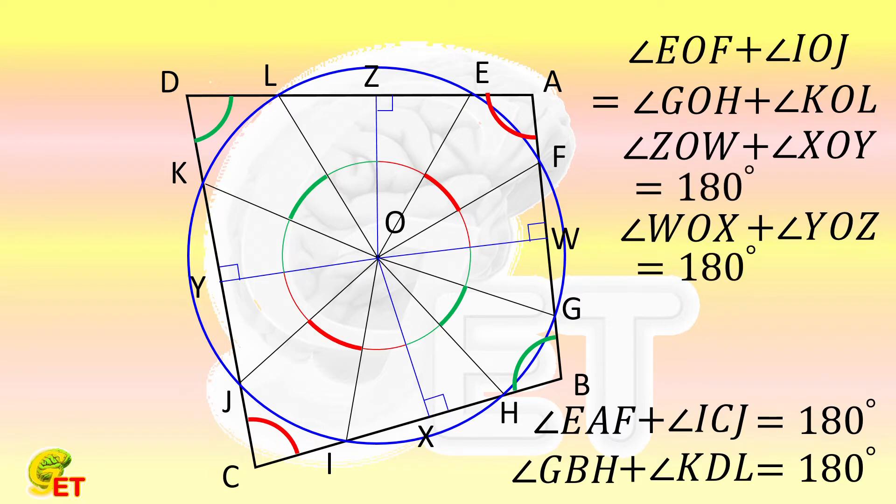Regarding the second benefit, let's take a look at the quadrilateral AWOZ first. The angles ∠AWO and ∠OZA are already right angles, so the summation of the other two angles must be 180 degrees. This conclusion applies to the other three corresponding quadrilaterals as well.